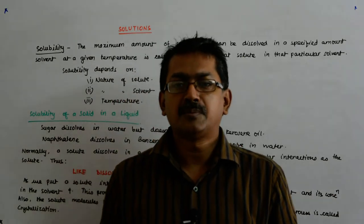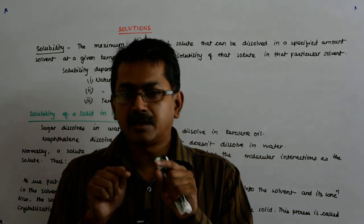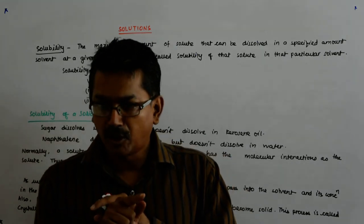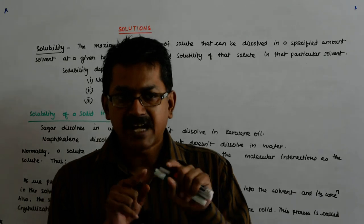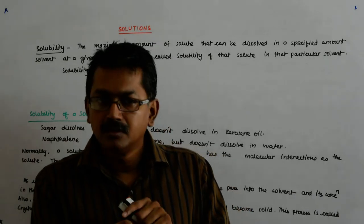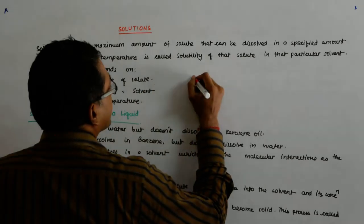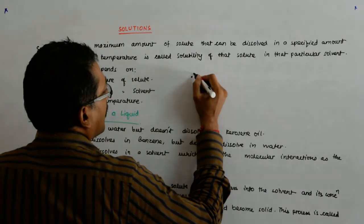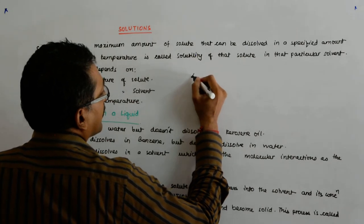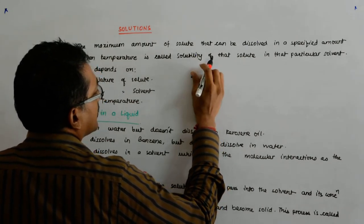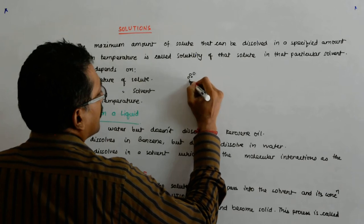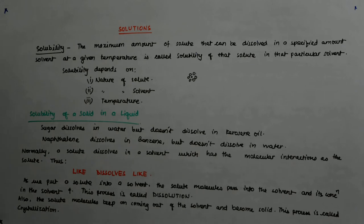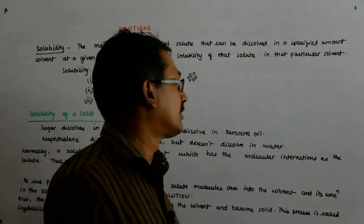What happens is that there is a constant bombarding by the liquid molecules onto the solid molecules which have gone into the liquid. For example, there is a solute molecule here. Now, this has got dissolved. It is surrounded by solvent molecules. That is when you say that it has become aqueous. That is when you say that it has completely dissolved.